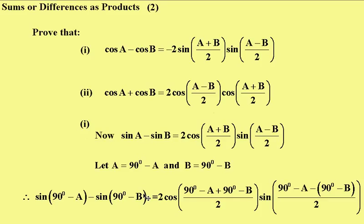Now we know from the previous video that sin A minus sin B equals 2 cos of (A+B)/2 times sin of (A-B)/2.